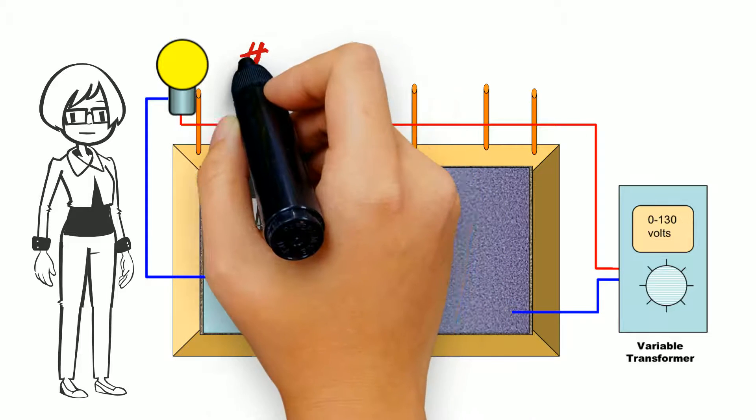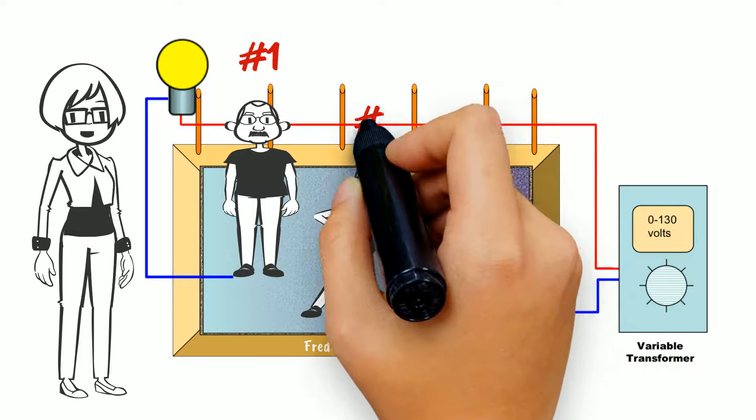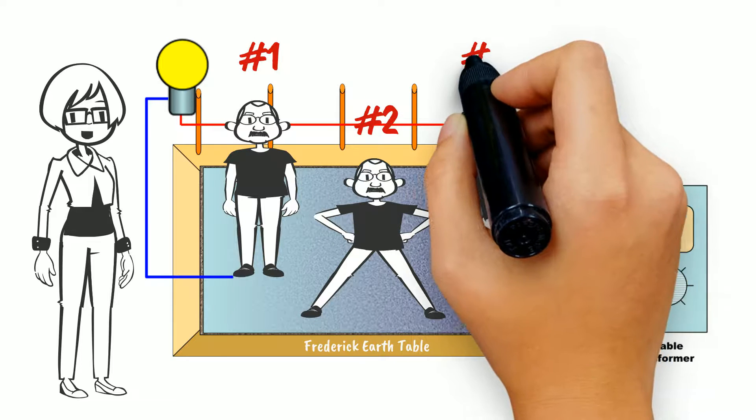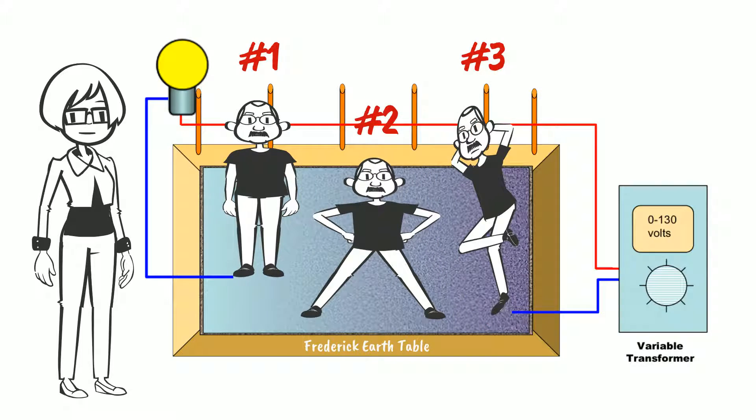Here's a quiz for you. Which Ralph has the most current flowing through his body? Ralph number one, number two, or number three? The correct answer is Ralph number two. Let me explain. The further apart the feet, the greater the electrical potential difference between the feet, and the greater the flow of electrons.